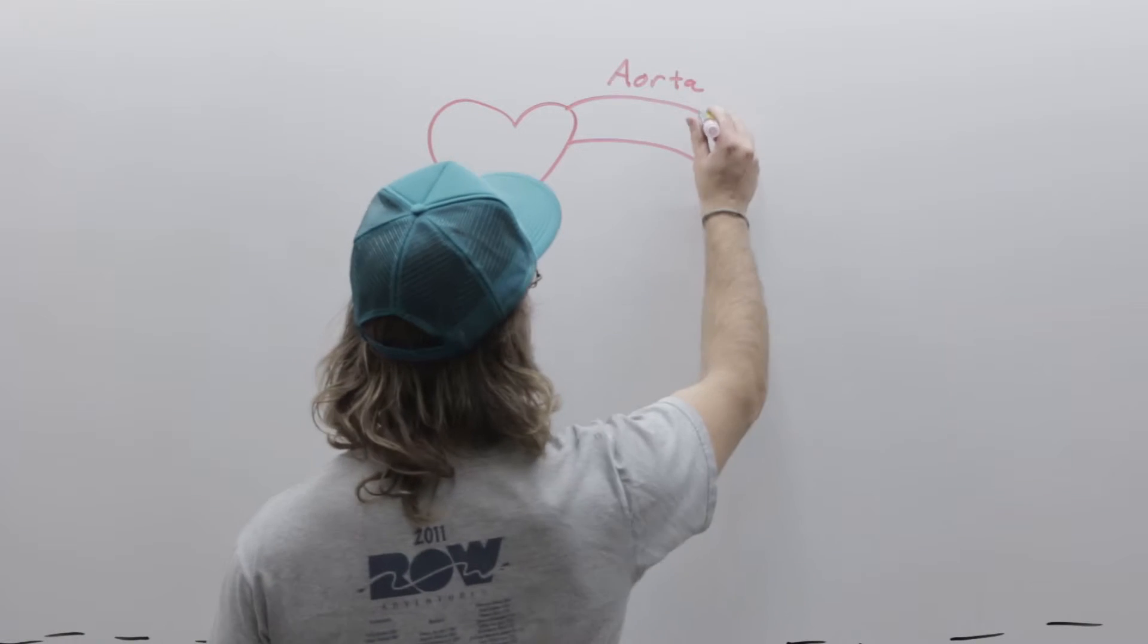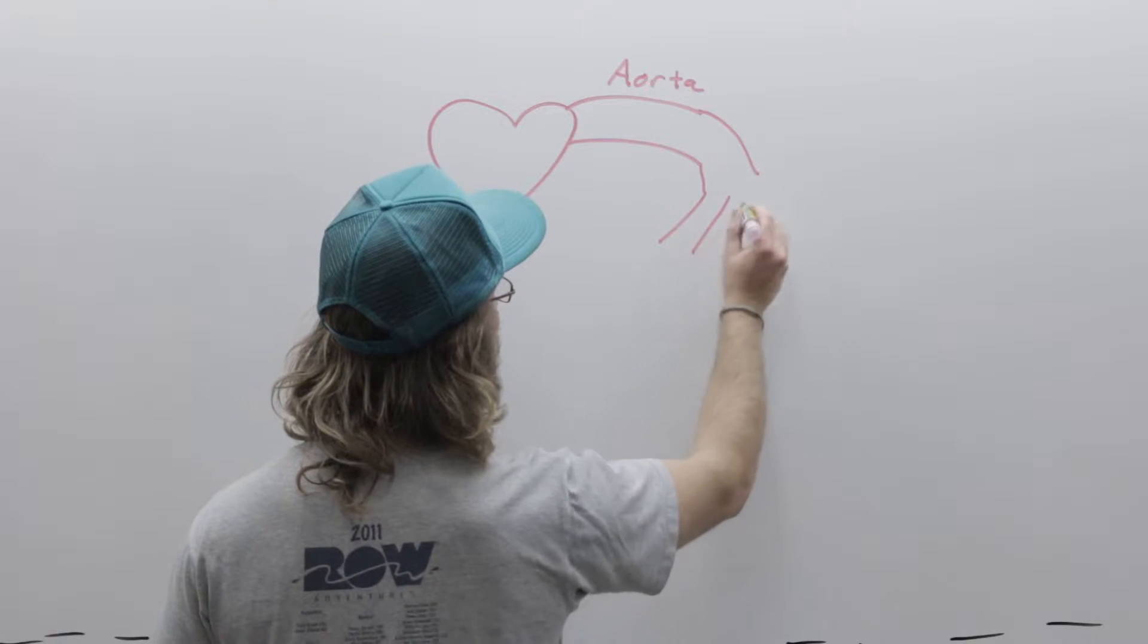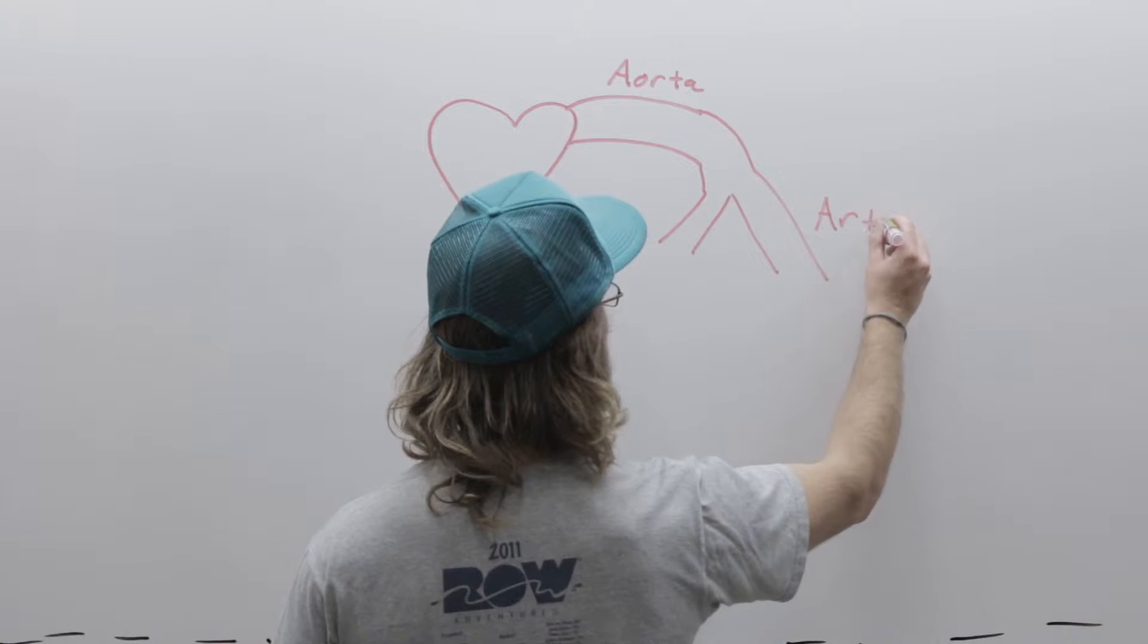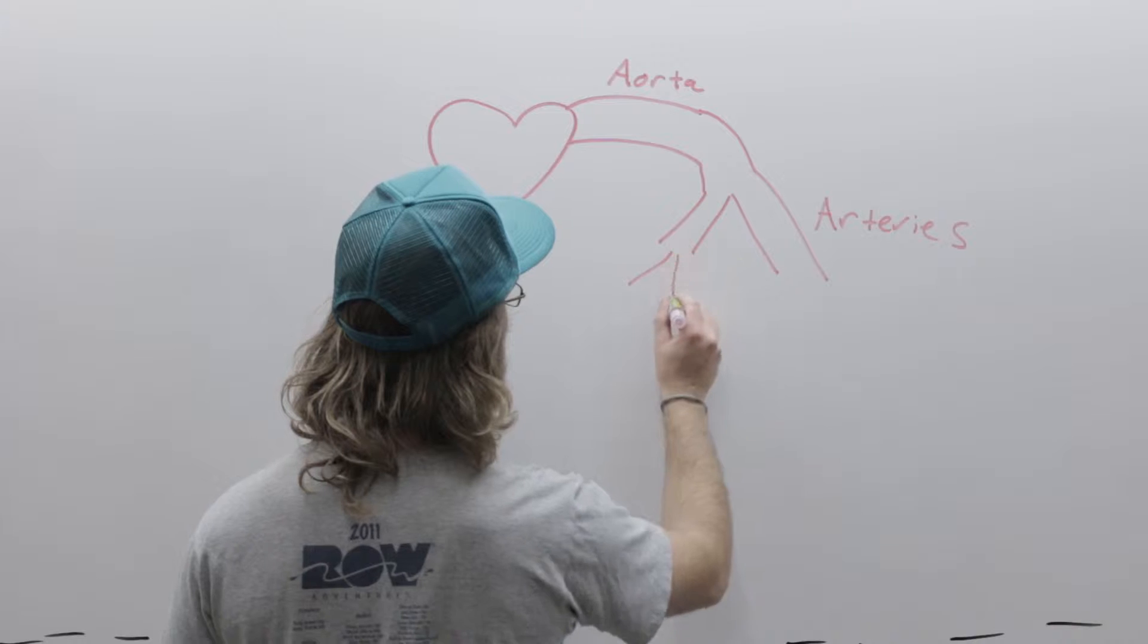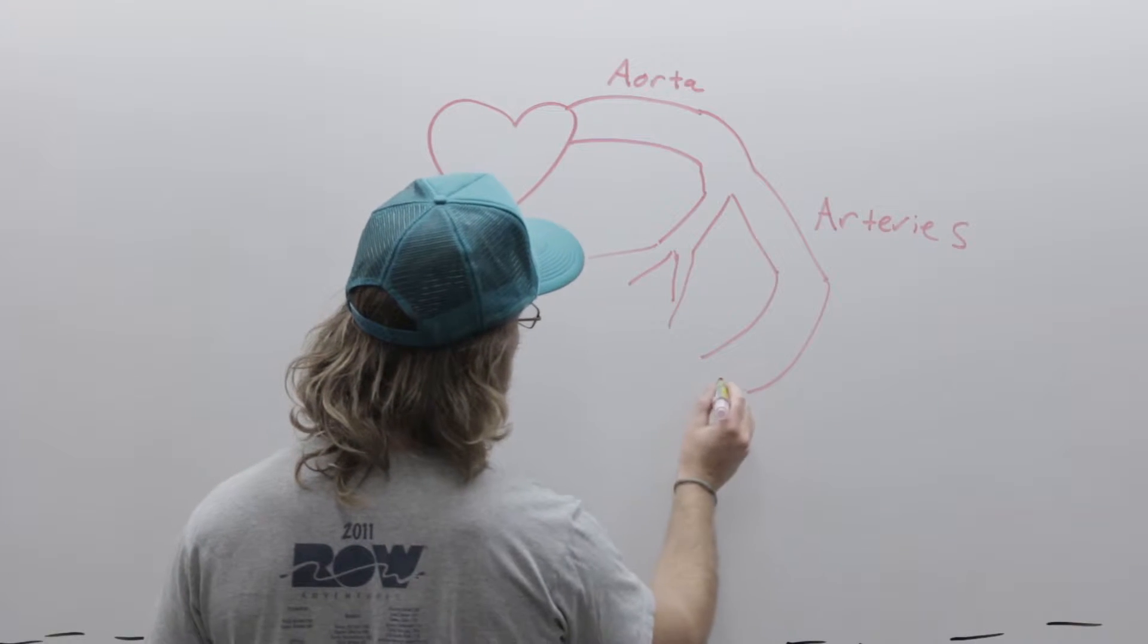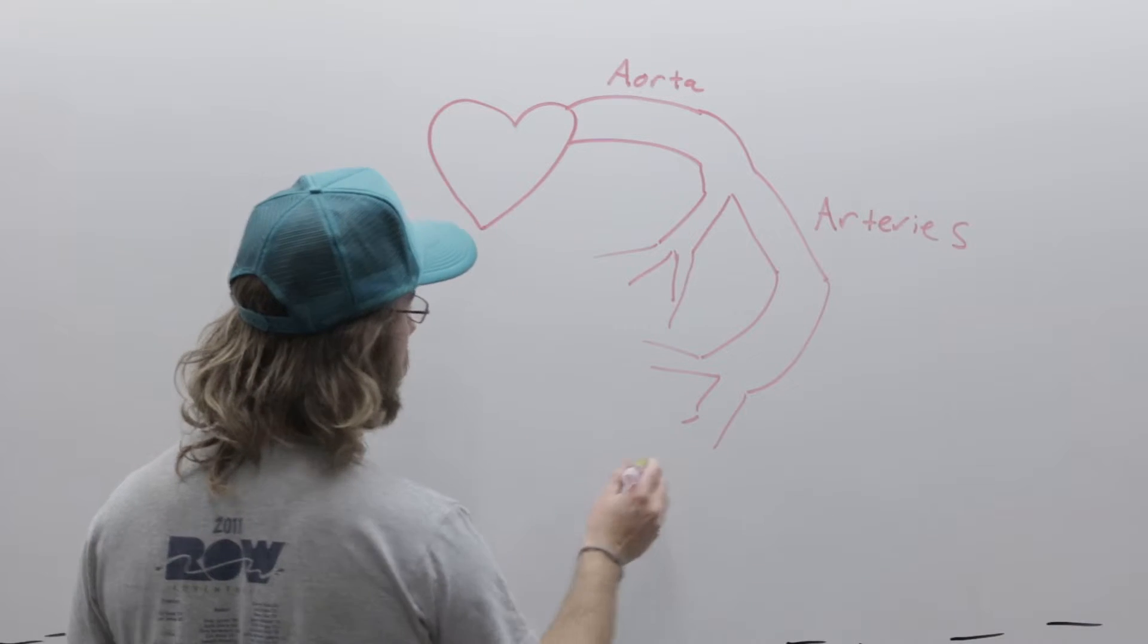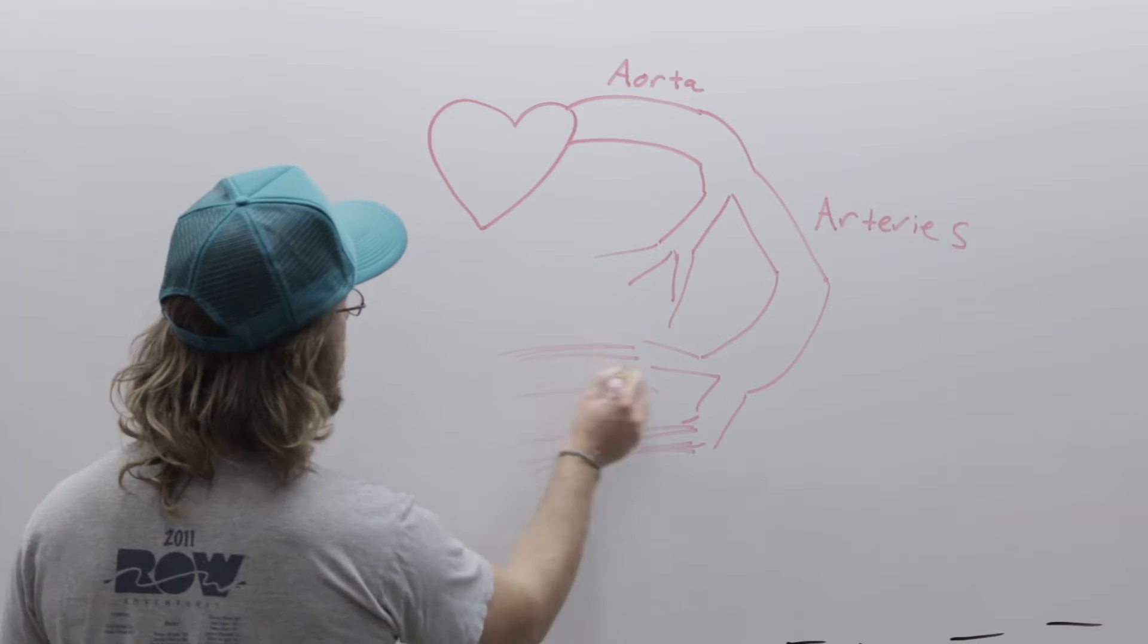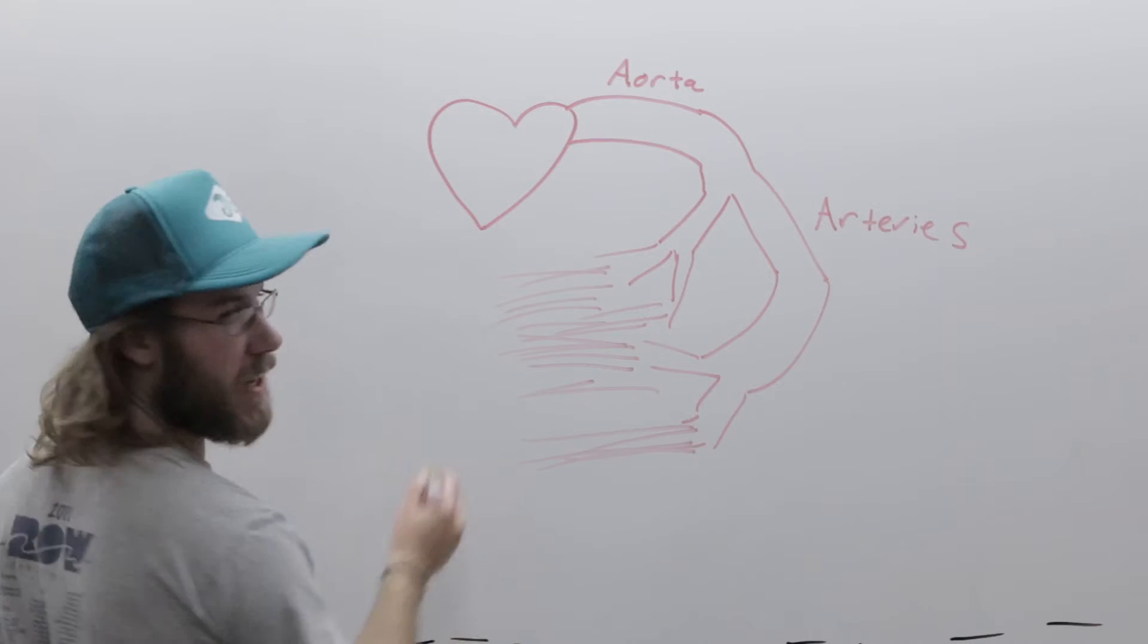The aorta will then branch into arteries. And those will turn into capillaries, which we're just going to draw as a series of small lines, because they are very small.